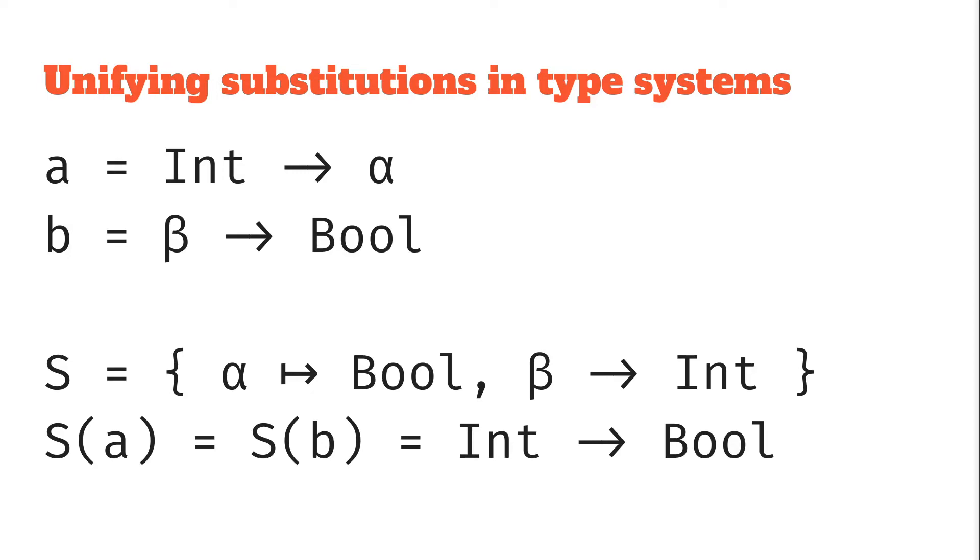So looking back at our earlier example where we had Int → α and β → Bool, this is what we've done. If you can imagine at some stage in your type inference process you've discovered this expression has to have these two type constraints, or has these two types, we'd like to merge them together, and we do that by unification. We find that the only type that that part of the expression can have is Int → Bool, and in doing that unification step we have effectively done a step in the type inference process.